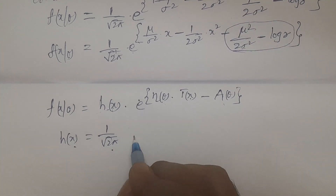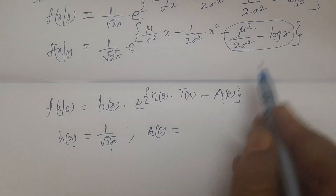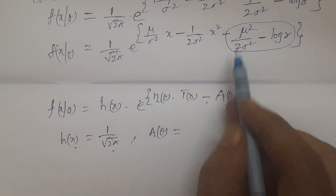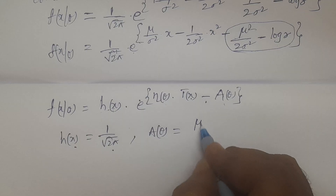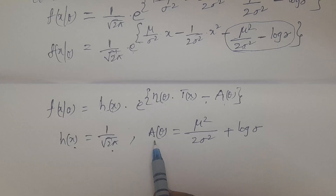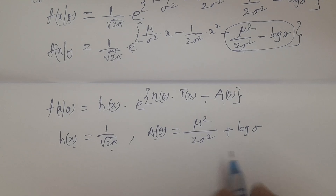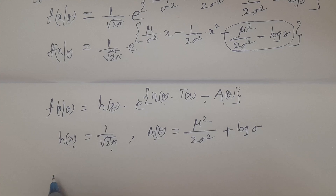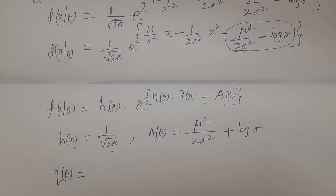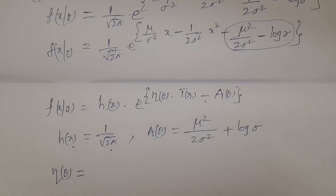The log normalizer A(θ): taking the minus sign into account, A(θ) equals μ²/(2σ²) plus log σ. Now I write η(θ), the natural parameters of the distribution. Since we have two parameters, we need η₁(θ) and η₂(θ).